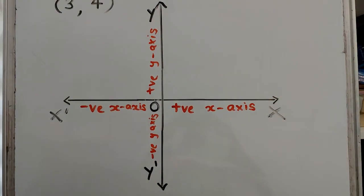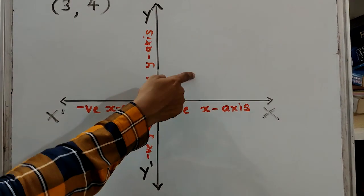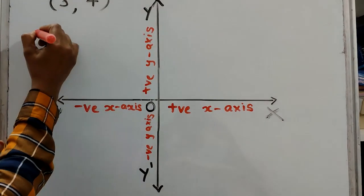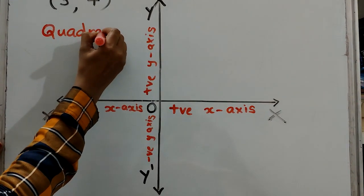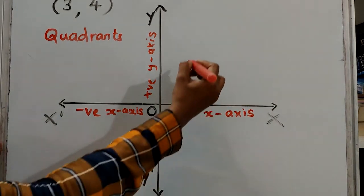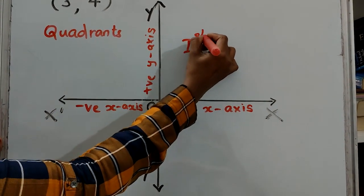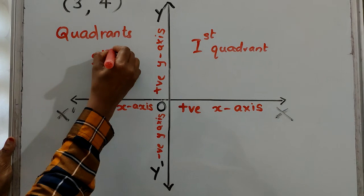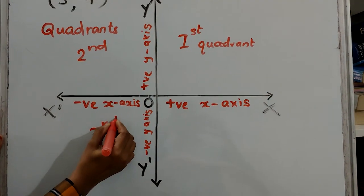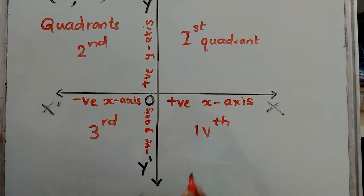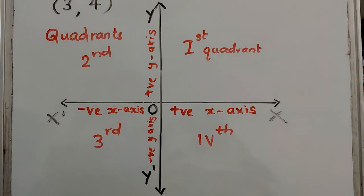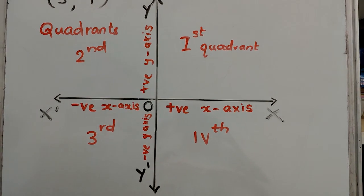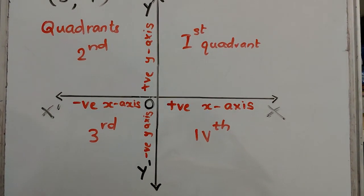This plane or graph sheet is divided into 4 parts, and these 4 parts are called quadrants. This is the first quadrant, this is the second quadrant, this is the third quadrant, and this is the fourth quadrant. This plane is called the Cartesian plane, or XY plane, or coordinate plane. These axes are called the coordinate axes.